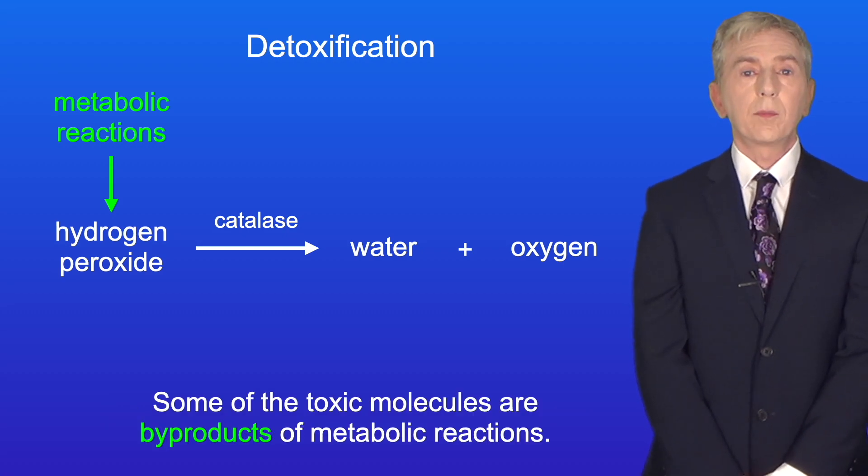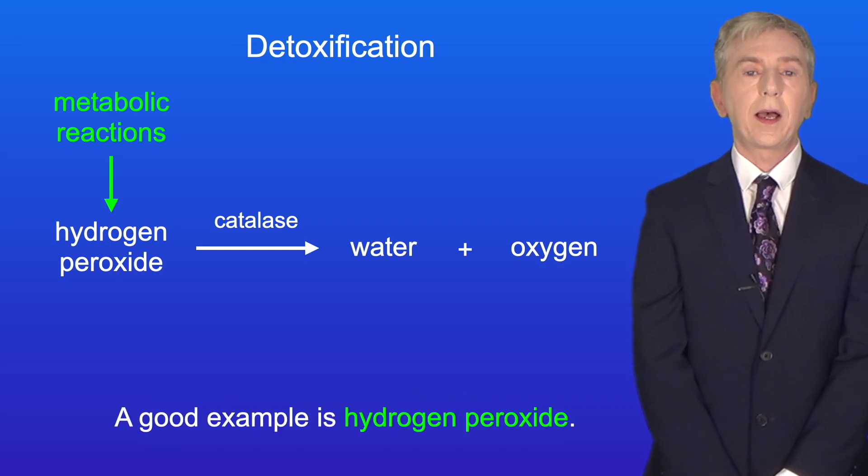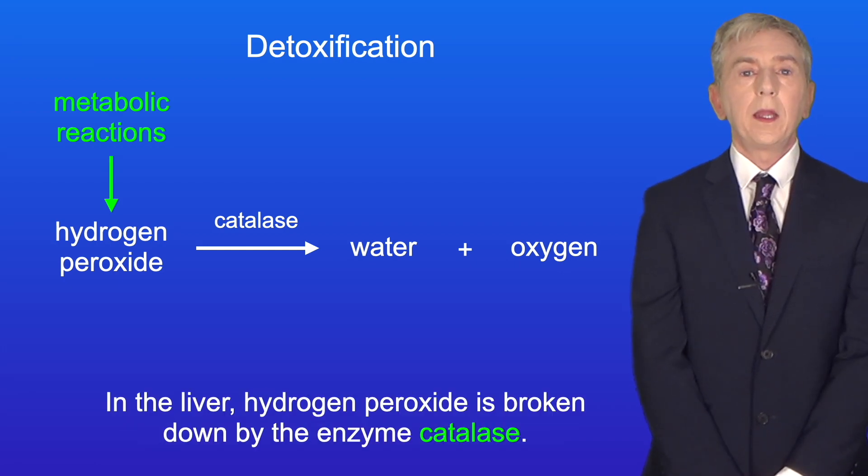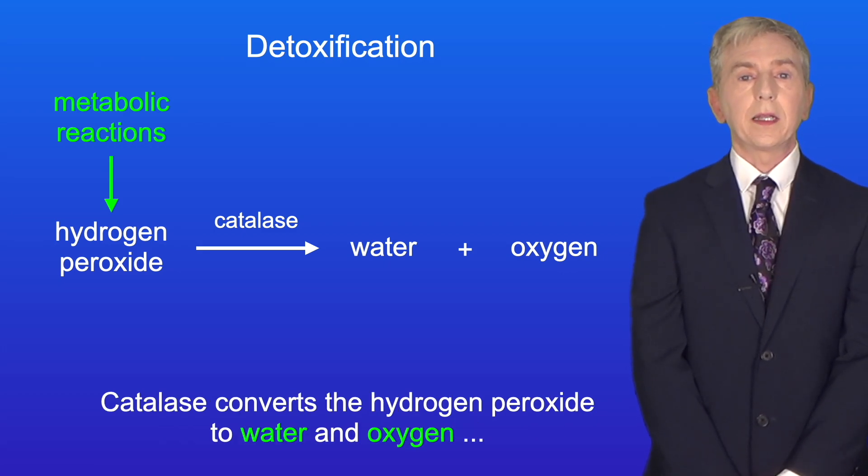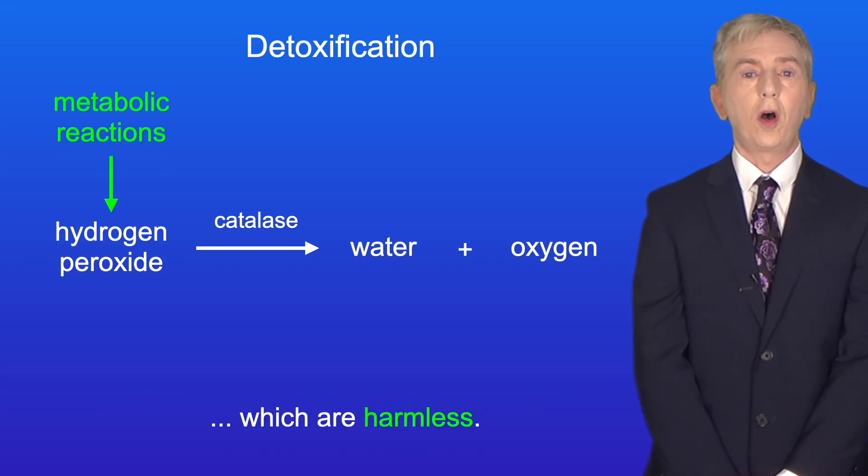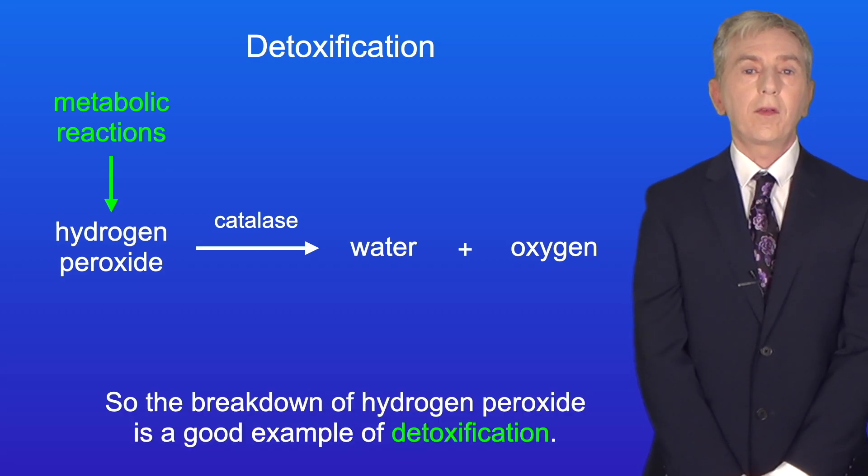Some of the toxic molecules are byproducts of metabolic reactions, and a good example is hydrogen peroxide. In the liver, hydrogen peroxide is broken down by the enzyme catalase. Catalase converts the hydrogen peroxide to water and oxygen, which are harmless. So the breakdown of hydrogen peroxide is a good example of detoxification.